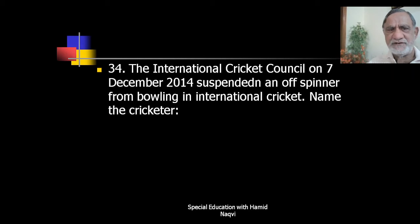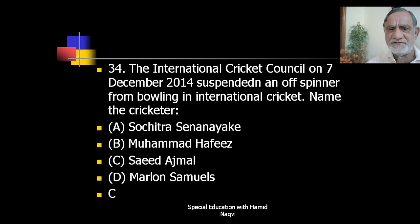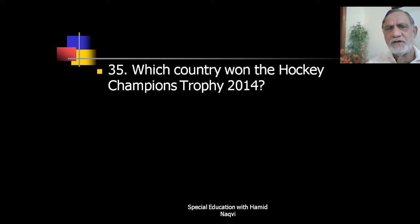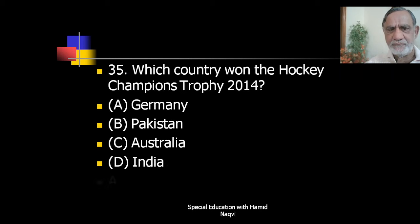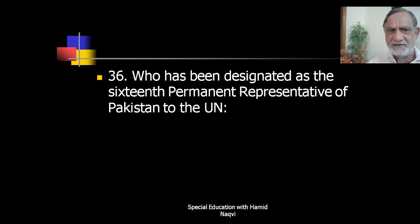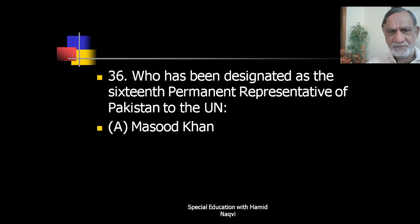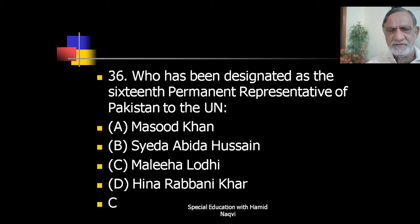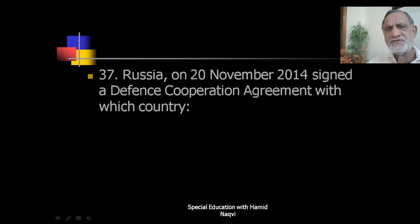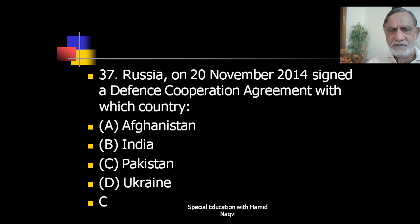The International Cricket Council on 7th December 2014 suspended an off-spinner from bowling in international cricket — the cricketer is Saeed Ajmal. Which country won the Hockey Champions Trophy 2014? The correct answer is Germany. Who has been designated as the 16th permanent representative of Pakistan to the UN? The correct answer is Maleeha Lodhi. Russia on 20th November 2014 signed a defense cooperation agreement with Pakistan.